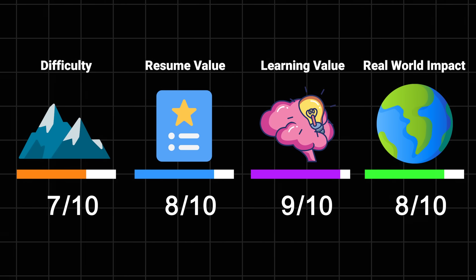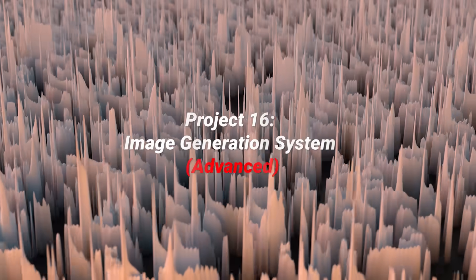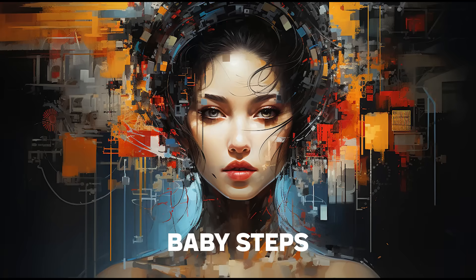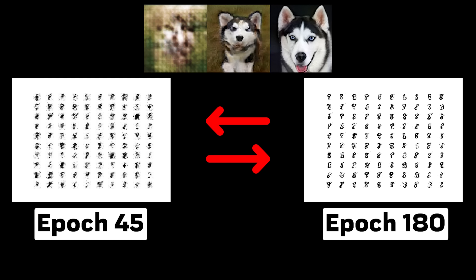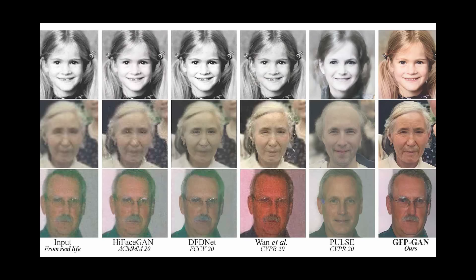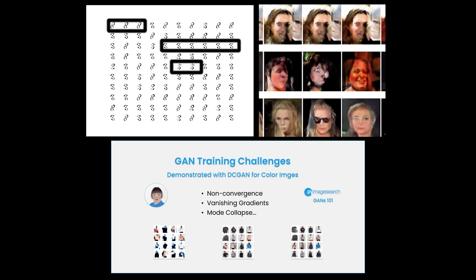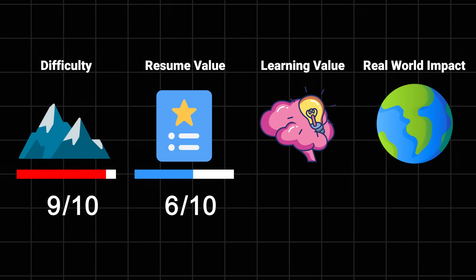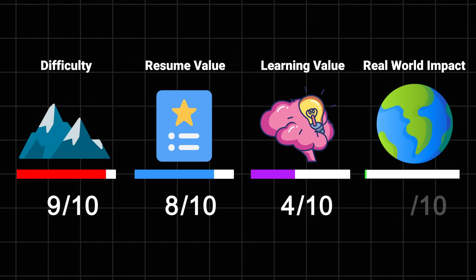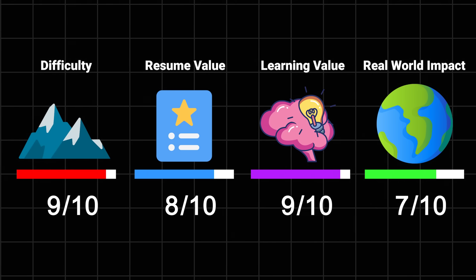Image generation system. No, we're not building Midjourney quite yet, but we are going to create something that can generate images. We'll start with basic GANs and work our way up to something that can actually create recognizable pictures. Fair warning: you'll spend a lot of time looking at weird distorted images before getting anything good, but that's part of the fun. Difficulty: 9 out of 10. Resume value: 8 out of 10, unless you're applying to an AI art company. Learning value: 9 out of 10. And impact: 8 out of 10.